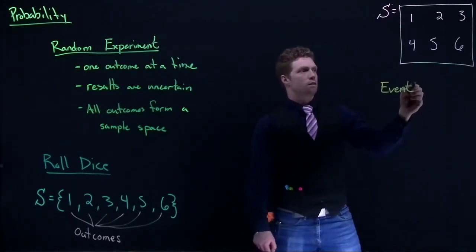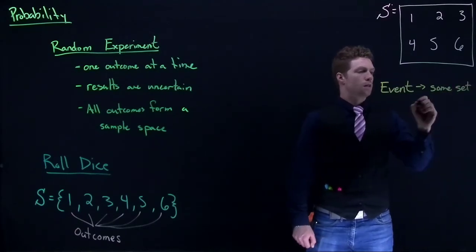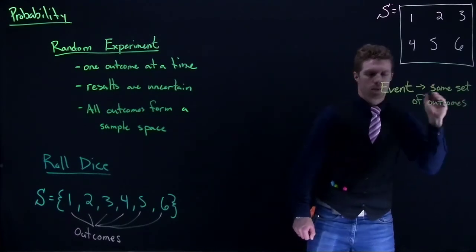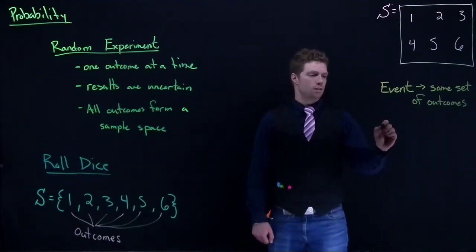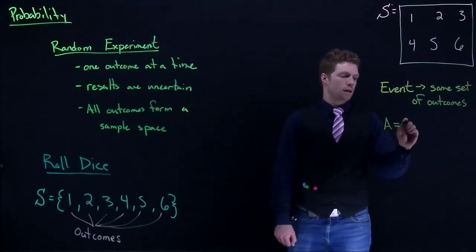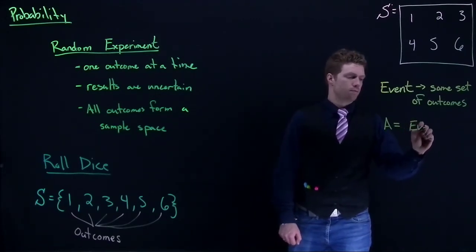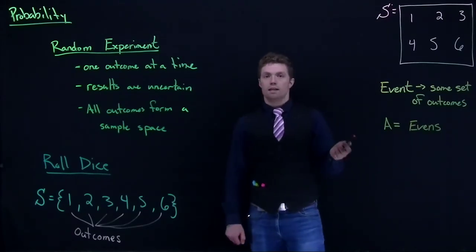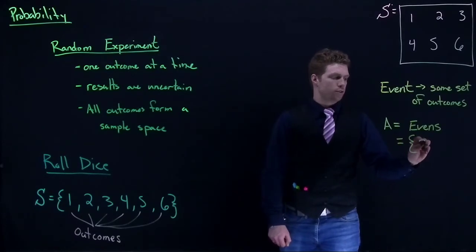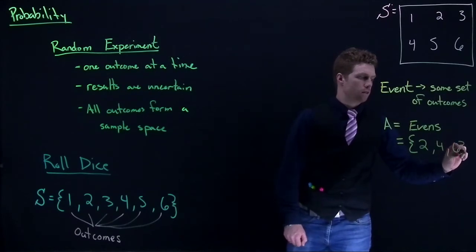An event is just some set of outcomes. Let me create a certain event. Let's say event A equals the evens, then it's going to be equal to two, four, and six.